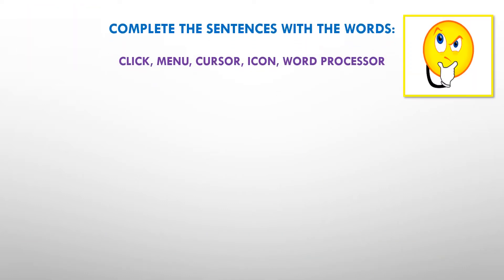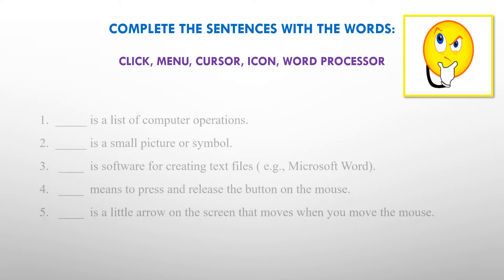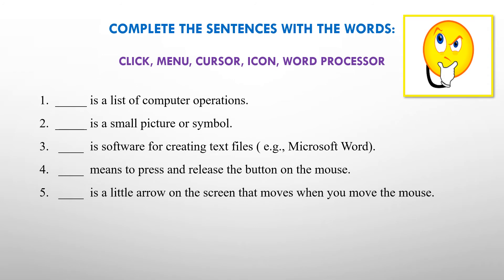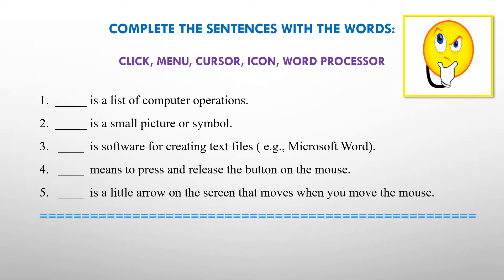There are many specific words associated with a computer. Look at the list of these words: click, menu, cursor, icon, word processor. Translate these words into your native language using the Tech Terms Computer Dictionary. And now, complete the sentences with these words. To check if you completed these sentences correctly, use the keys to this exercise that you can see below.